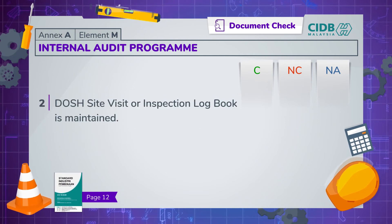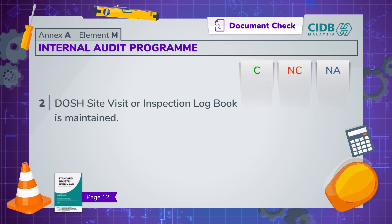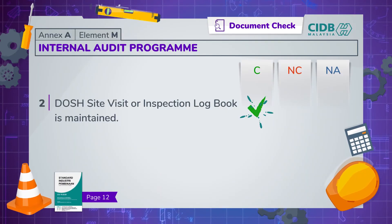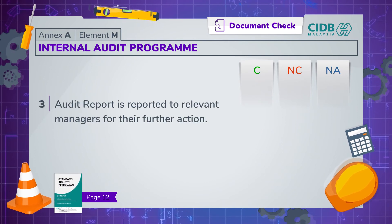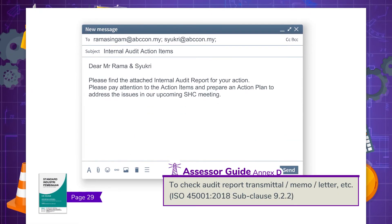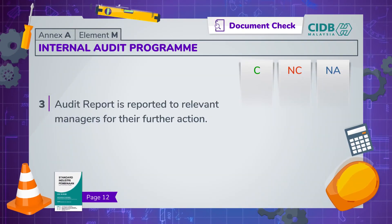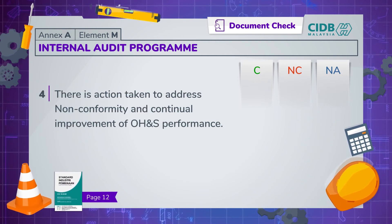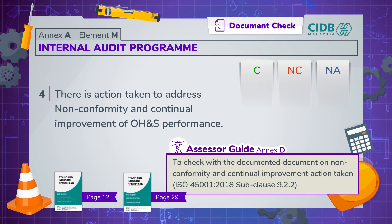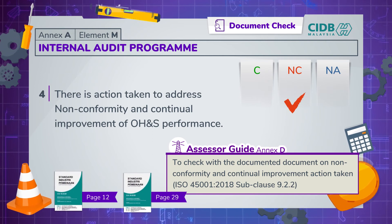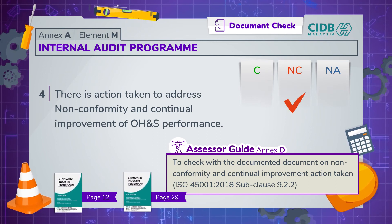The site management should be able to produce a DOSH site visit or inspection logbook. Besides that, ascertain that the audit report has been sent to the relevant managers for further action by referring to audit report transmittal, memos, letters or other relevant documents. In connection with incidents and non-conformity reported, ask for documentation of the action taken to address them and any steps taken for continual improvement. Tick non-compliance if no such documents are produced or if the documents are inadequate.